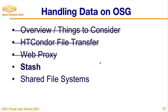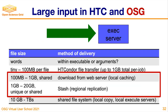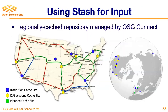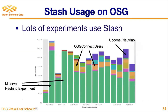Stash is a regionally cached repository managed by OSG, for the 1 gigabyte to 20 gigabyte range, whether unique or shared data. You'll see on a map of the United States all the dots representing the locations of different caches — many of them are along Internet2 network backbone lines, and there are also a few international caches used by different experiments. There's a graph of Stash usage over the last two weeks — a lot of usage is from the MINERvA experiment out of Fermilab, and there are also several OSG Connect users using Stash cache for their experiments.